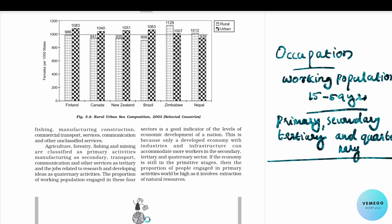In terms of sex ratio, in rural areas and urban areas there are different types. In the cases of Canada and Finland, this is an urban area and this is a rural area.